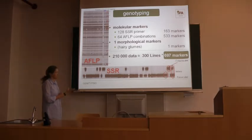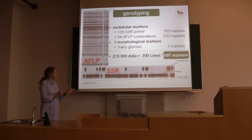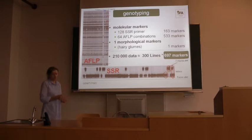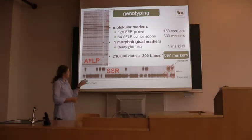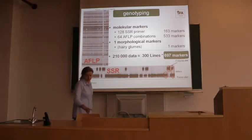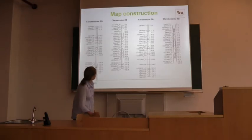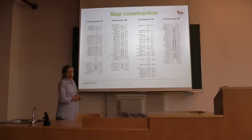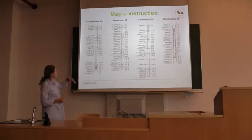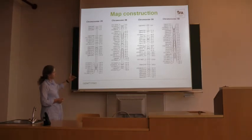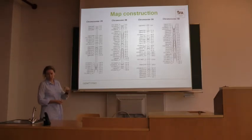Now you calculate your statistics. Then you get a map from those markers — you see on which chromosome they are, how they are aligned, and you also calculate the distances between the various chromosome positions.